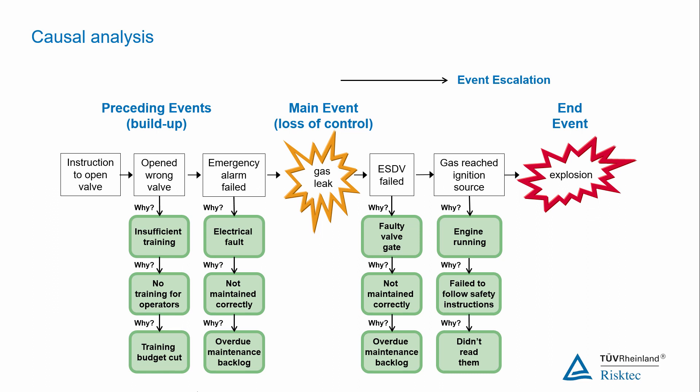Why was there an ignition source? Answer, because an operator left the engine of a vehicle running. Why did he leave the engine running? Answer, because he failed to follow safety instructions.